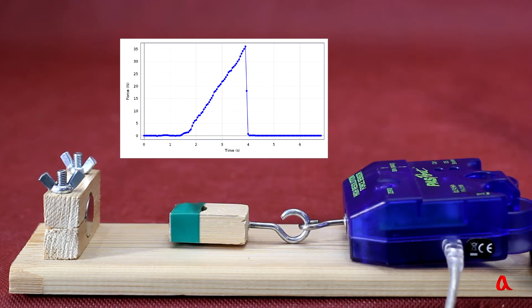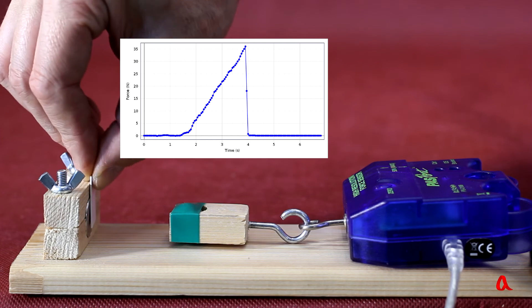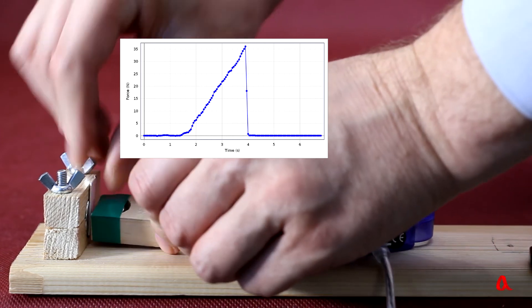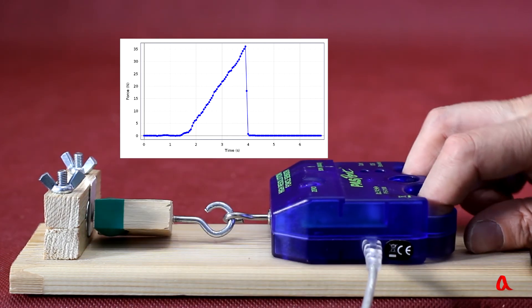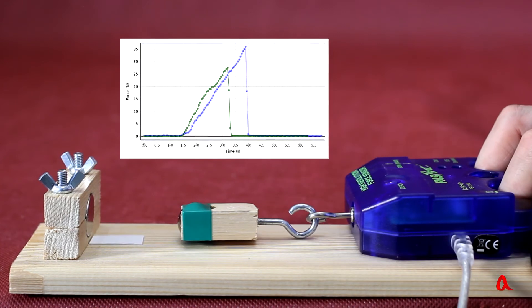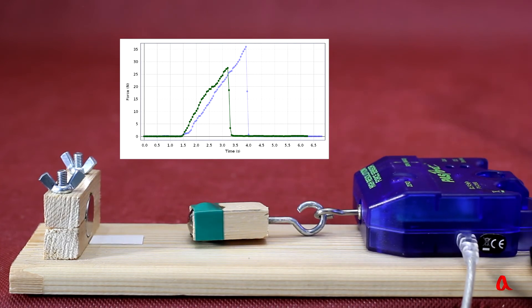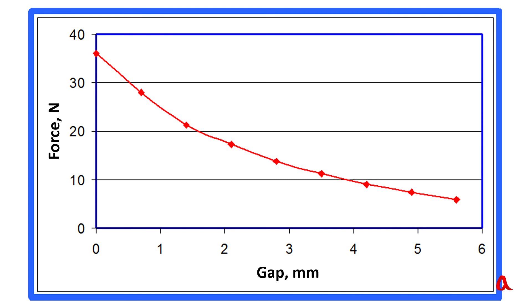Let us put a 0.7 mm gasket between the magnet and the ball and pull at the sensor. The pull-off force has decreased to 28 N. Making the gasket thicker with every round, we find how the attraction force depends on the gap weights. It can be seen that this force is decreasing very rapidly.